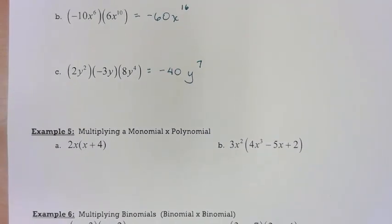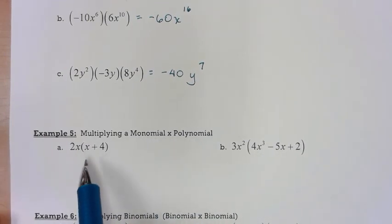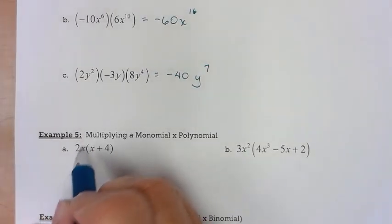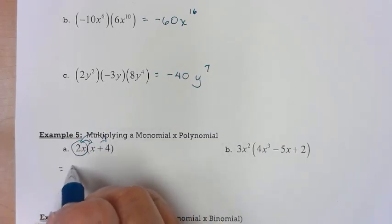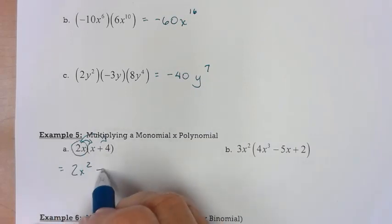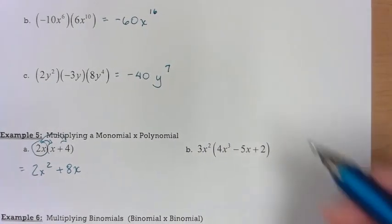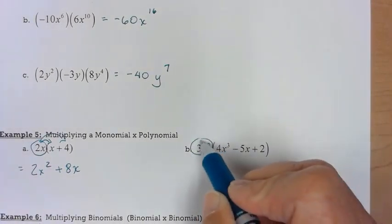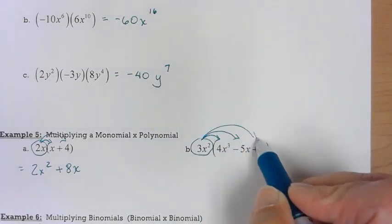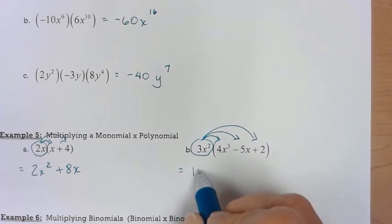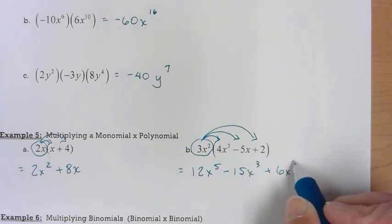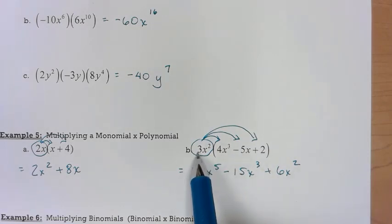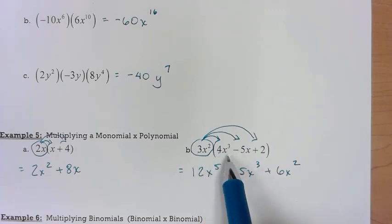Now multiplying a monomial times a polynomial — in this first instance, a monomial times a binomial. Whatever you're multiplying by gets distributed through. So 2x times x gives me 2x squared, and 2x times 4 gives me plus 8x. Distribute all the way through to all terms inside. Remember to go numerical coefficient times numerical coefficient, and x squared times x cubed takes you back to the product rule.